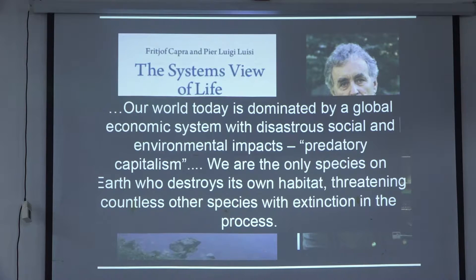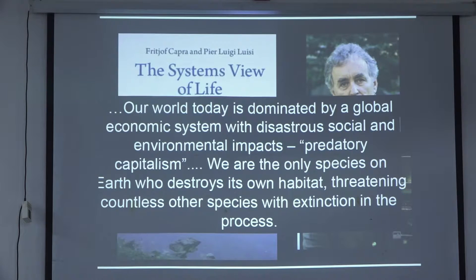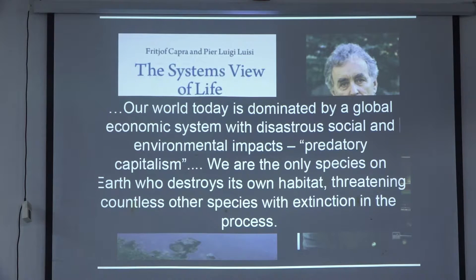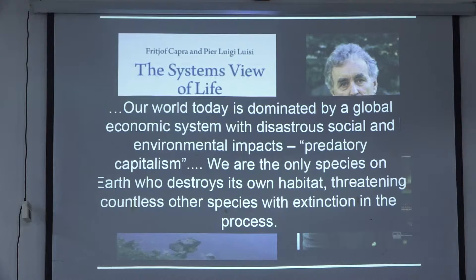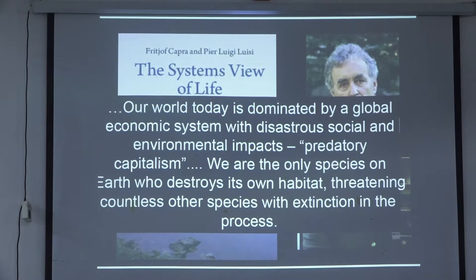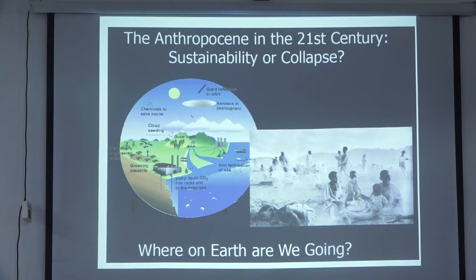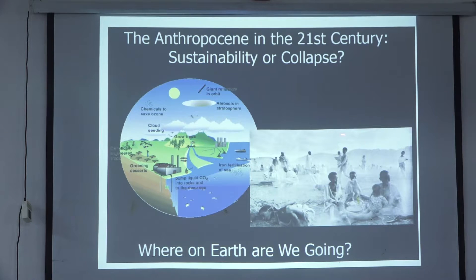There's a famous author — 'The Tao of Physics' was his first book in 1974, and he wrote another book in 2014 called 'The Systems View of Life.' He wrote: our world today is dominated by a global economic system with disastrous social and environmental impacts — predatory capitalism, he called it. We are the only species on Earth who destroys its own habitat, threatening countless other species with extinction. The Anthropocene in the 21st century: sustainability or collapse? Large-scale geoengineering solutions on one side — and let's hope that is not where we are going.